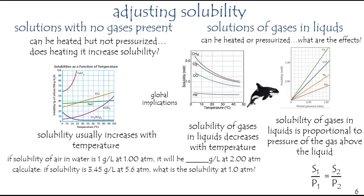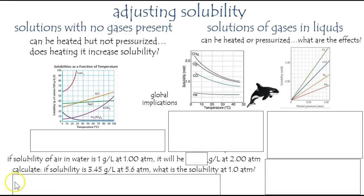And if the solubility of air in water is one gram per liter at one atmosphere, it will double when we go to two atmospheres, to two grams per liter. And if the solubility is 3.45 grams per liter, that's our S1 at 5.6 atmospheres, that's our P1, at one atmosphere it should be six times roughly less, and therefore the solubility goes down to 0.61 grams per liter.